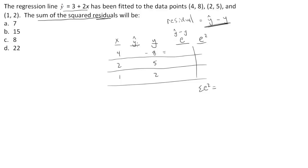What is my first predicted y? Well, the first predicted y is going to be predicted y equals 3 plus 2 times x, where x is 4, and this gives me 11. So 11 is my predicted y, the actual y is 8, and so 11 minus 8 gives me 3. When I square that, I get 9.